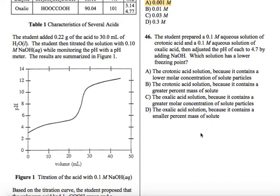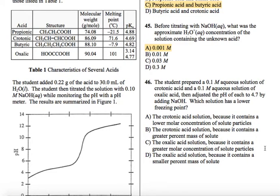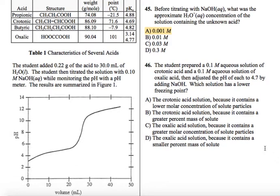So A says the crotonic acid solution because it contains a lower molar concentration of solute particles. I mean, no, that's not true. Because if it had a lower concentration, then it wouldn't have a lower freezing point. So it's not A. B, the crotonic acid solution because it contains a greater percent mass of solute. Does it? Greater percent mass. Yeah, I'm not quite sure that's the correct answer. So let's look at choice C. The oxalic acid, sometimes you're going to see answer choices where you're kind of like, what? So you just move on and then look for the best answer because usually it'll be very clear which answer is correct, especially in the science sections.